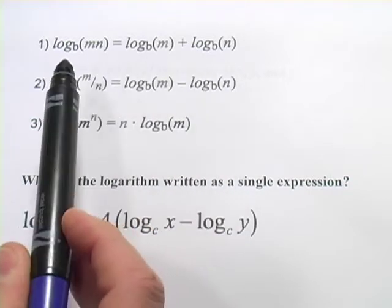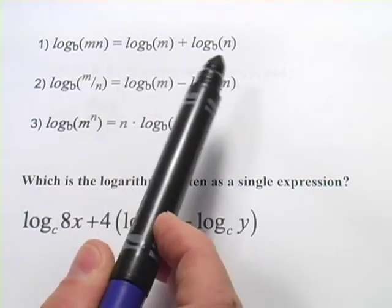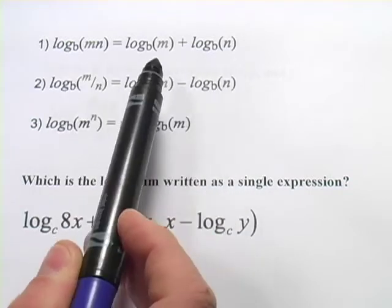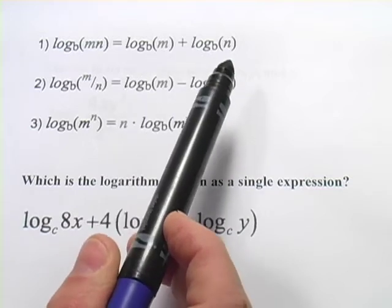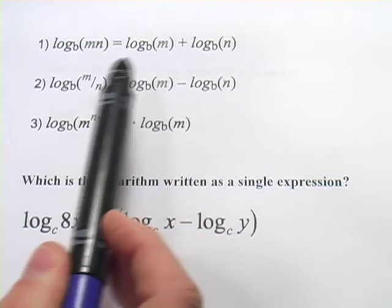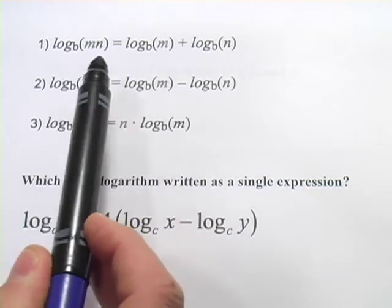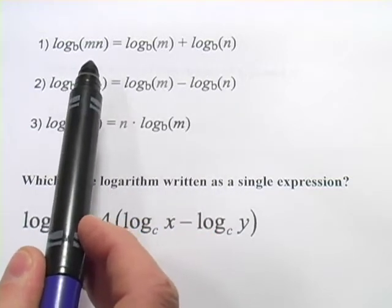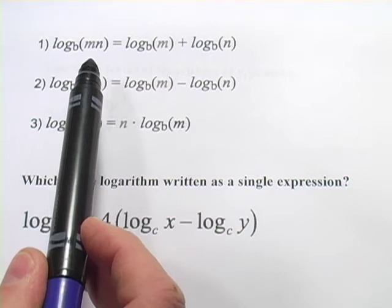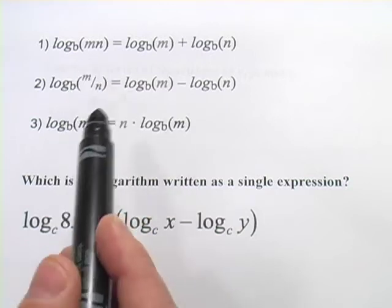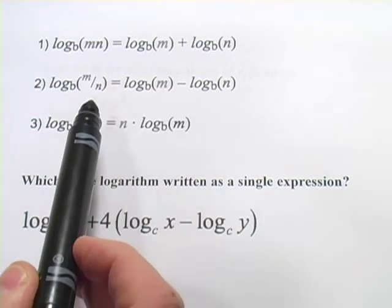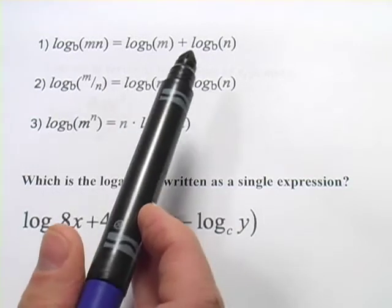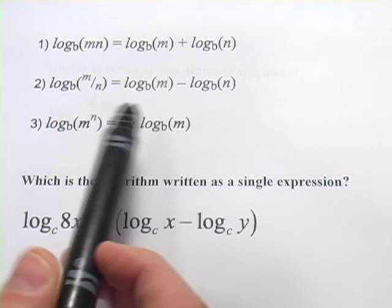So it's the same thing, and of course you can go either direction. If you see log base b of m plus log base b of n, you can rewrite it as log base b of m times n. The same thing goes for division, except instead of adding, it's subtraction.